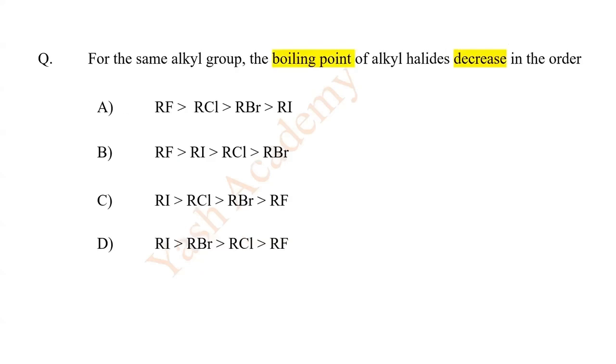For the same alkyl group, the boiling point of alkyl halides decreases in the order — answer is D.